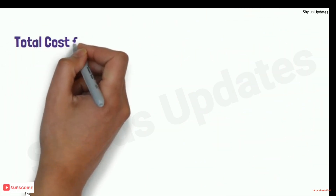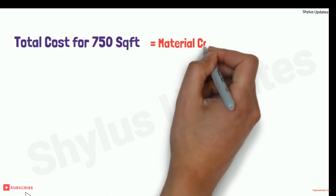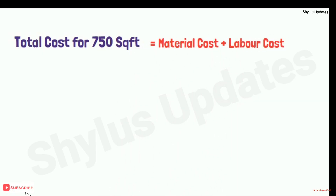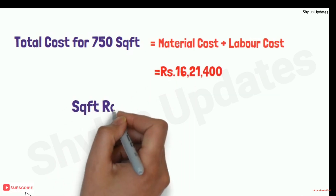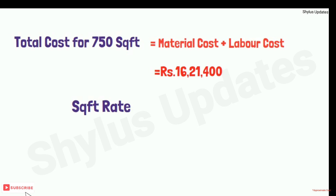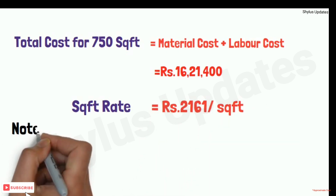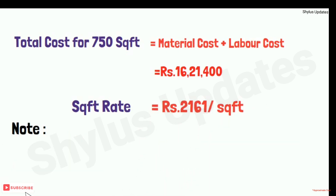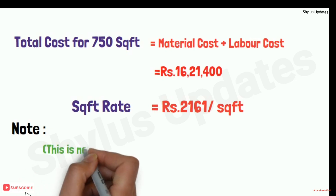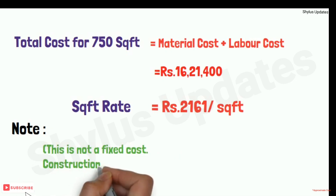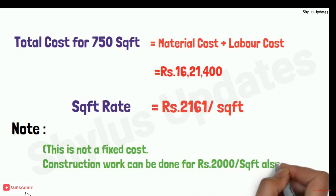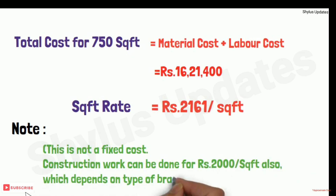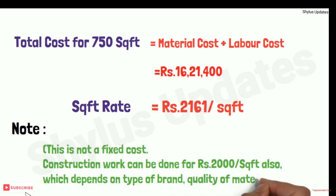Total cost for a 750 square feet house equals material cost plus labor cost. When you add them, you get rupees 16,21,400. The square feet rate is rupees 2,161. This is not a fixed cost — construction work can be done for rupees 2,000 per square feet or even less, depending on the type of place, brand, and quality of materials used.